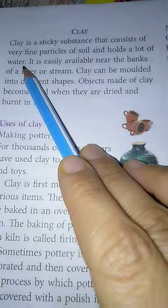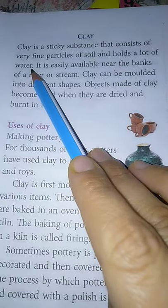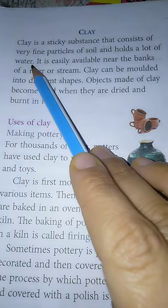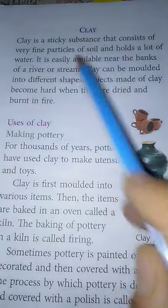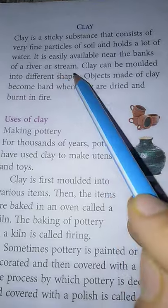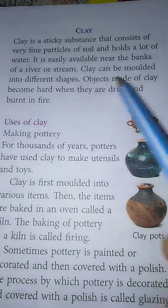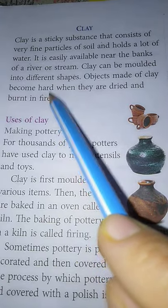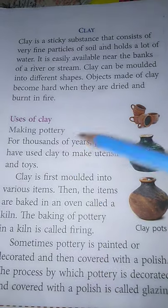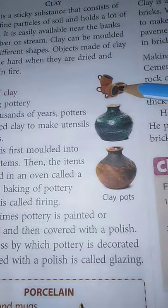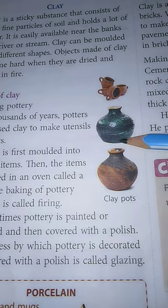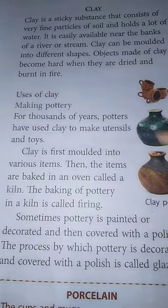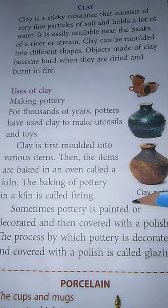Next is clay. Clay is a sticky substance that consists of very fine particles of soil and holds a lot of water. You may use clay for making craft items. Naturally, clay is found near the banks of rivers or streams. Clay can be moulded into different shapes, and with clay we make pottery — mugs and pots are all made up of clay.